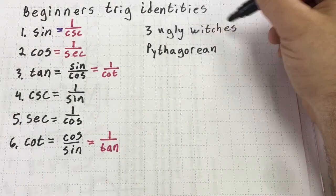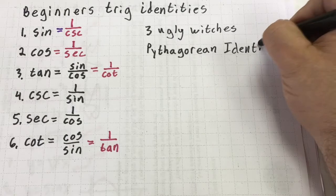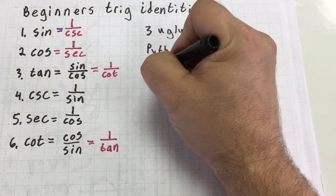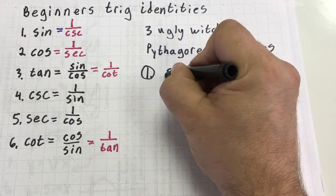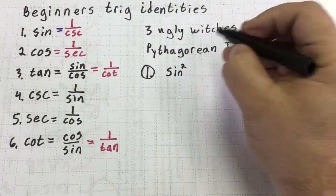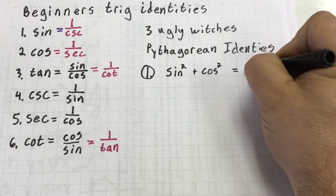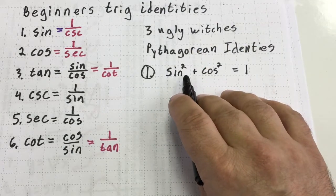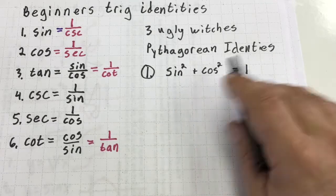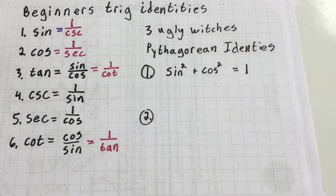I'm going to use a little slang here. These are called the three ugly witches, or the Pythagorean identities. The first one you should commit to memory: sine squared plus cosine squared equals one. There could be a letter there — sine squared x, cosine squared x, or sine squared theta — but I'm just going to do it this way so it's a little easier to write down.